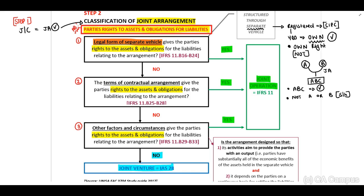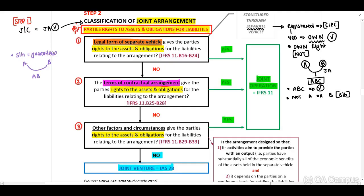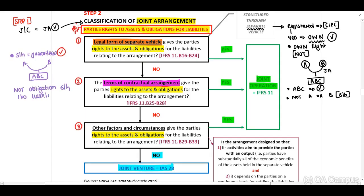Question number two: the terms of our contractual arrangement. For example, the contractual arrangement indicates that the shareholders will sign guarantees for our registered entity — our separate vehicle. In the same scenario with company A, company B, and registered company ABC Ltd., the agreement indicates that our shareholders will sign guarantees, meaning this is not an obligation of our shareholders in terms of the contractual arrangement.